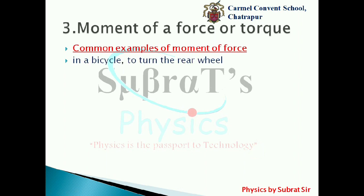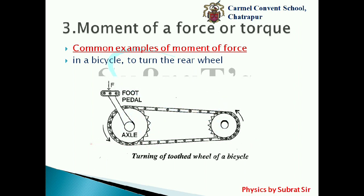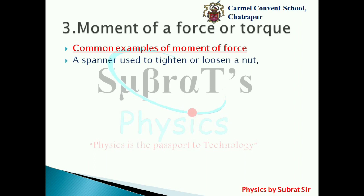In a bicycle, to turn the rear wheel anticlockwise, a small force is applied on the foot pedal of a toothed wheel that is larger than the rear wheel, so that the perpendicular distance of the point of application of force from the axle is large. The toothed wheel is joined to the rear wheel by a chain through their teeth.